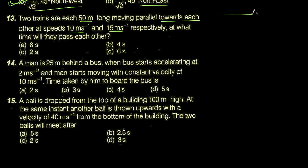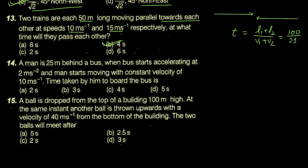ایک train اس طرف سے آ رہی ہے اور ایک train دوسری طرف سے آ رہی ہے تو کتنی دیر میں cross کریں گے؟ Time = (total length) / (relative velocity) = (l1 + l2) / (v1 + v2)۔ Length = 50 + 50 = 100m، relative velocity = v1 + v2 = 25، تو time = 4 seconds میں وہ دونوں trains ایک دوسرے کو cross کر لیں گی۔